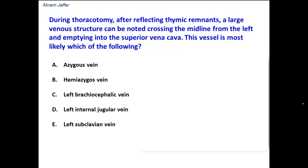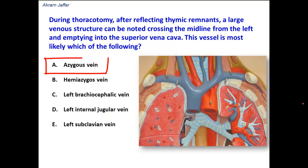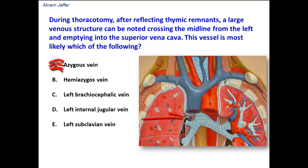Is it the azygous vein? No. The azygous vein is located on the right side and crosses from posterior to anterior above the root of the right lung, and then it drains into the superior vena cava. So it does not cross from left to right.